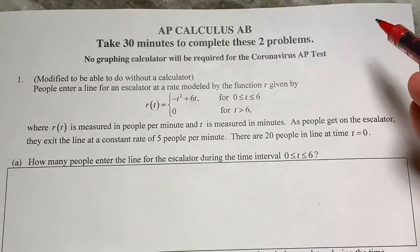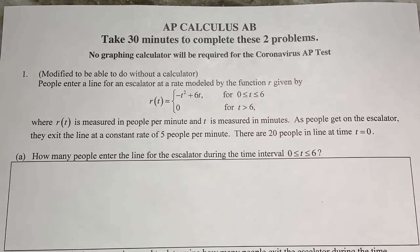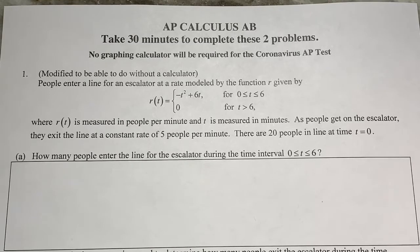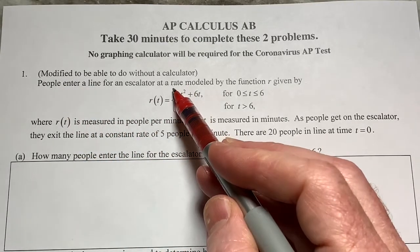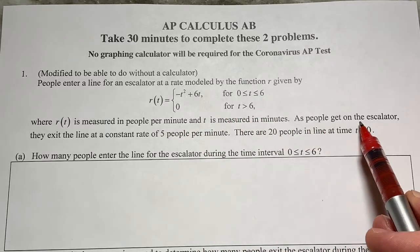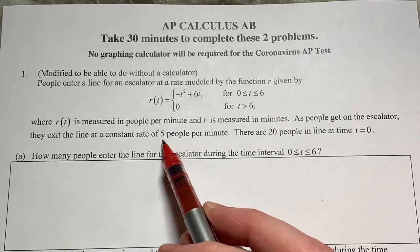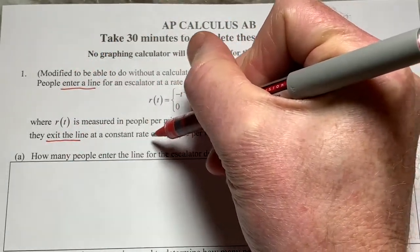So first thing we're doing is looking at number one. Remember, this was a calculator question — now it's not, so I've had to change a lot of the equations. I actually added another part, giving it five parts all the way through E. So the first thing: the rate at which people enter the line is given by this piecewise function. R is measured in people per minute, T in minutes. People exit the line at a constant rate of five. There are 20 people at time zero.